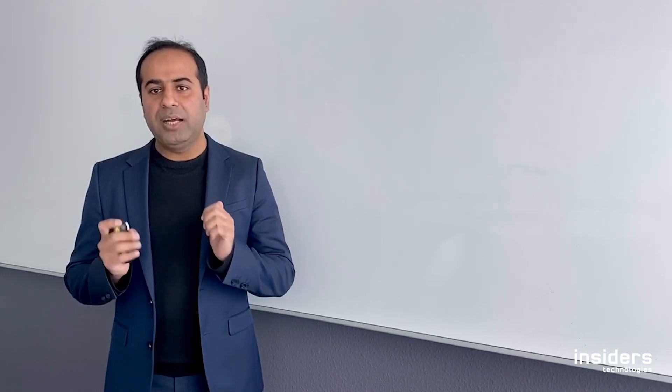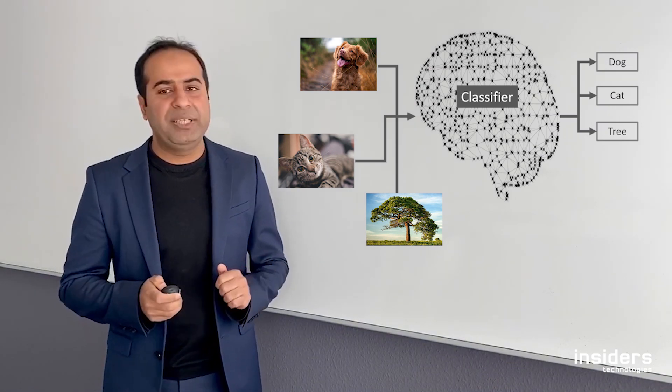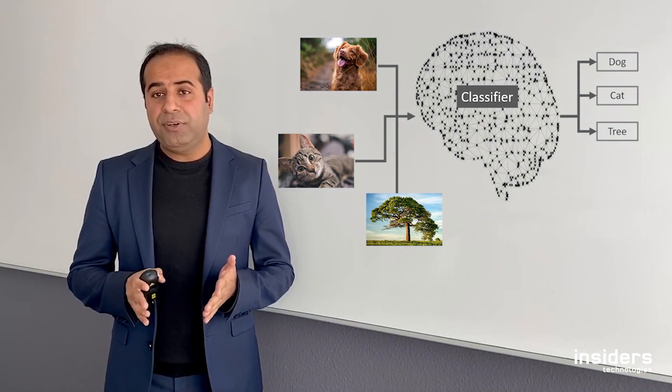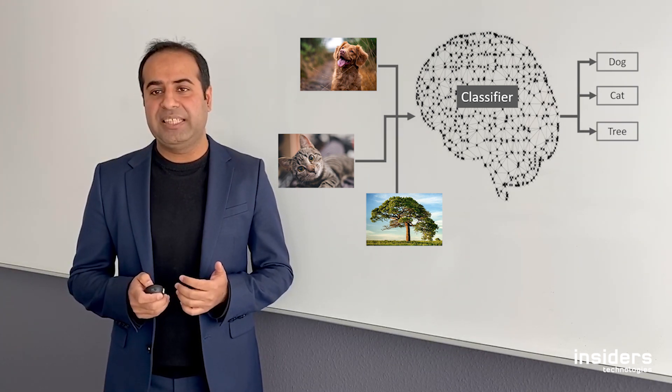When I think about artificial intelligence, one core task is classification. By looking at this figure, you see that there are three images: the dog, cat, and tree, and we want to associate them to related concepts.